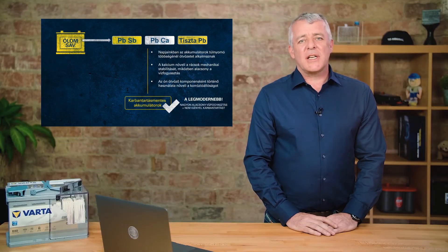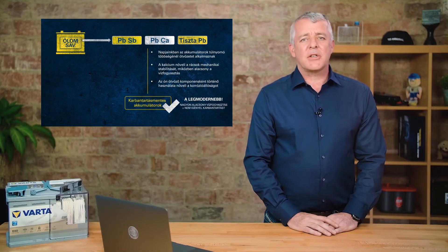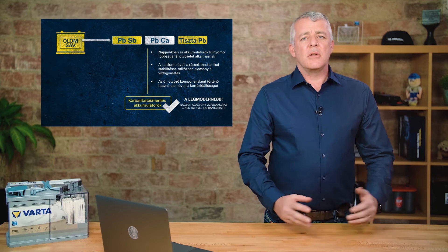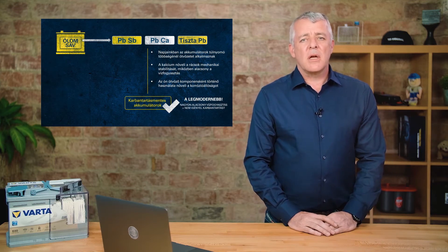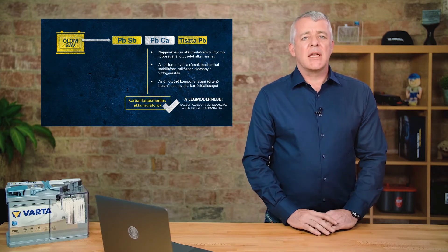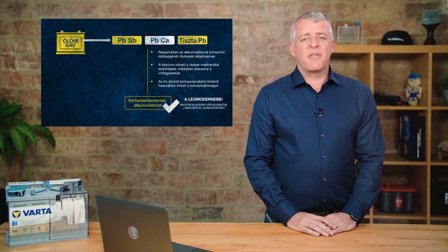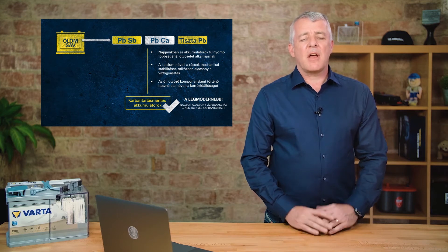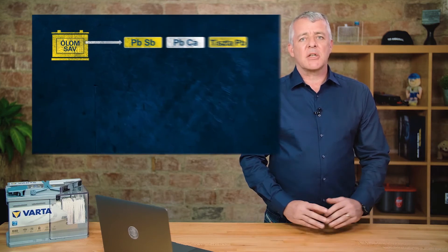In the past, during the transition from PBSB batteries to maintenance-free batteries, lead silver was also used — so-called PAG batteries, with AG standing for silver. These have been completely dropped from our range now and have been replaced with PBCA batteries.